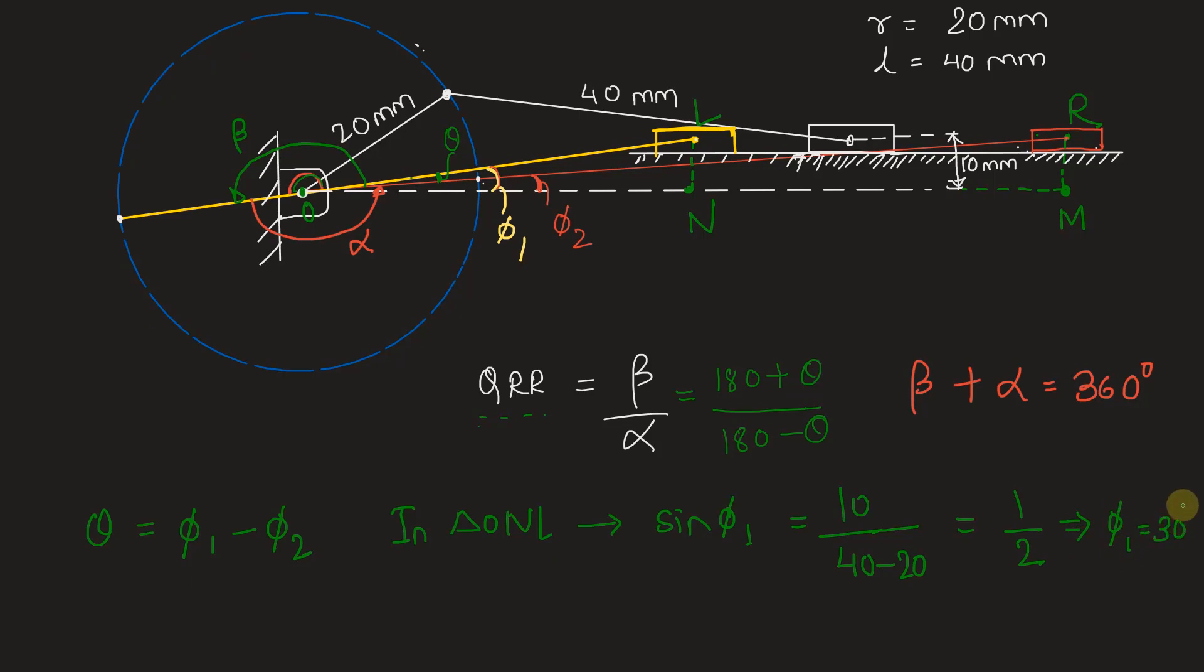Second thing, in triangle OMR, this bigger triangle OMR, we have sin phi 2 is equal to again opposite side 10 millimeters divided by the hypotenuse which is nothing but 40 plus 20. So we have this as 1 by 6, and this gives us phi 2 to be 9.594 degrees because sin inverse 1 by 6 is this value.